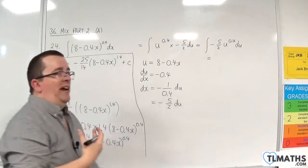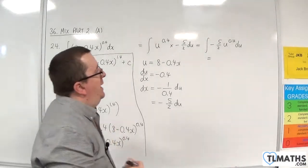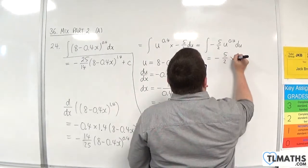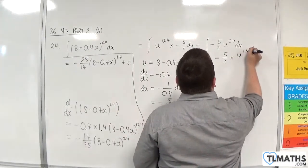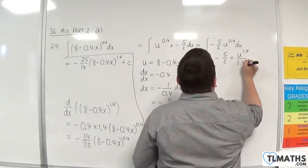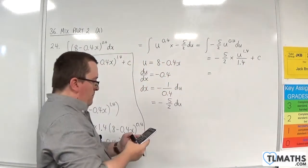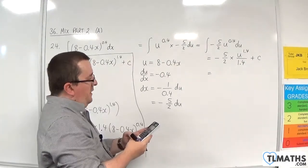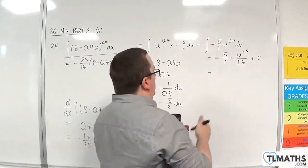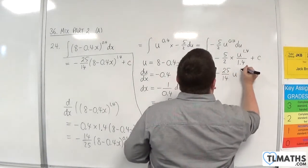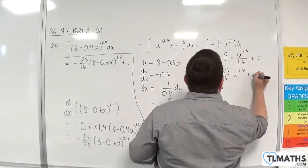So now just add 1 to the power, divide by the new power. So minus 5 halves times by u to the 1.4 over 1.4 plus a constant c. So minus 5 halves divided by 1.4 is minus 25 over 14 u to the 1.4 plus c.